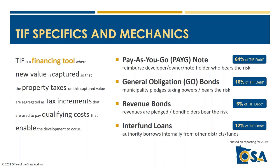Because development costs are incurred at the beginning and the tax increment revenue stream is collected over the duration, this requires the use of debt obligations. The most common type — at 64% of debt reported for 2019 — is the pay-as-you-go or pay-go note, where the authority reimburses the developer for qualifying costs. These are popular because the risk is not borne by the TIF authority if increments are insufficient. General obligation bonds were more common in early years, requiring municipalities to raise taxes if increments fall short. Revenue bonds and interfund loans are also used, often for supplemental costs like administrative expenses.